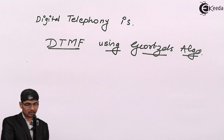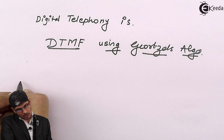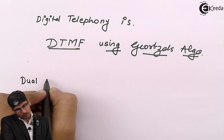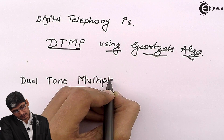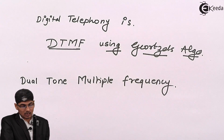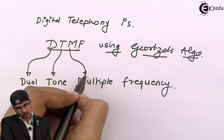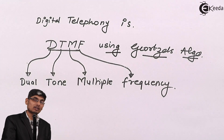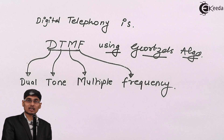Let us first understand what DTMF means. DTMF stands for Dual Tone Multiple Frequency — D stands for dual, T stands for tone, M stands for multiple, and F stands for frequency. We will be using this dual tone multiple frequency mechanism, and we will also see shortly why we use Goertzel's algorithm to detect these dual tone multiple frequencies.